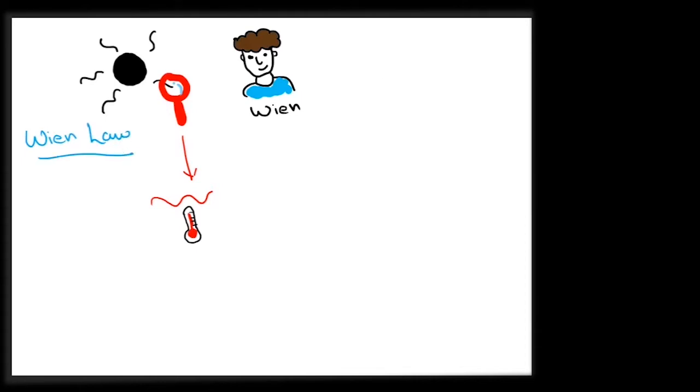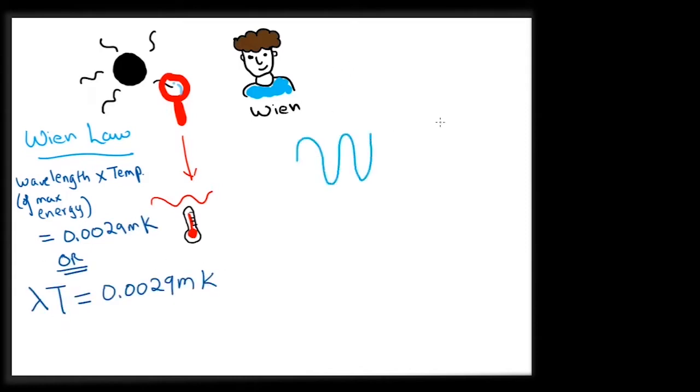While studying black hole radiations, Wien found out a relation between the wavelength at which maximum energy is being released by the source and the temperature of the source. This relation is called Wien's law and it states that the product of wavelength of the maximum energy radiation and the temperature of the radiating source is equal to a constant equal to 0.0029 meter Kelvin.